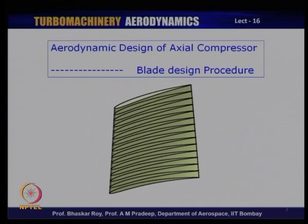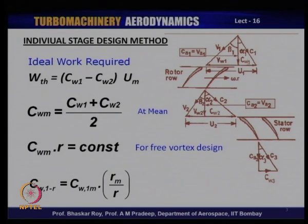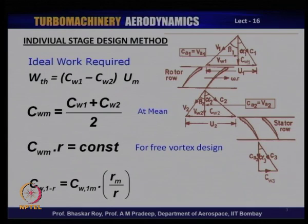It is arrived at after a number of iterations and probably very fine geometric modeling. Some of the modeling tools that are available — tools like CATIA, for example — need to be used to create such smooth blade shapes. Now let us see where we need to start. We need to start with the fact that you are designing an individual stage. You start with the fact that the stage needs to do a certain amount of work. This work is being supplied by the turbine and it is the minimum amount of work that needs to be supplied by the turbine. The theoretical work is W = (C_W1 - C_W2) × U at the mean.